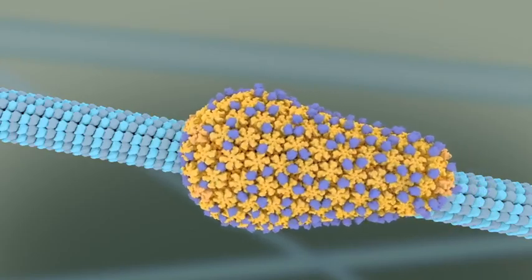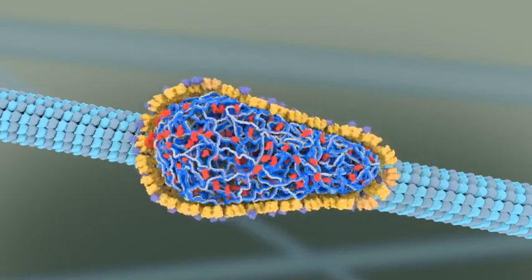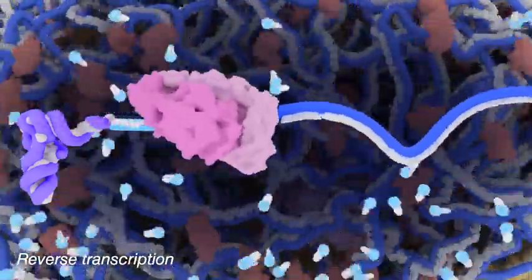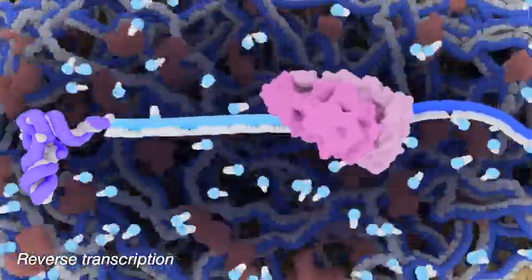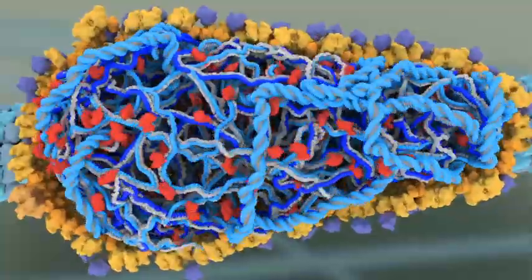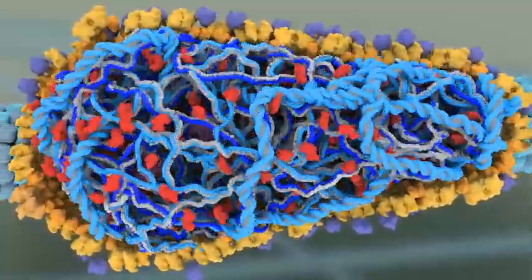During this translocation, a viral enzyme known as reverse transcriptase, or RT, gets to work. RT has already been primed during its time in the capsid, and starts to use cellular pools of DNA nucleotides to make a DNA copy of the RNA genome. As it goes, it degrades the single-stranded RNA.